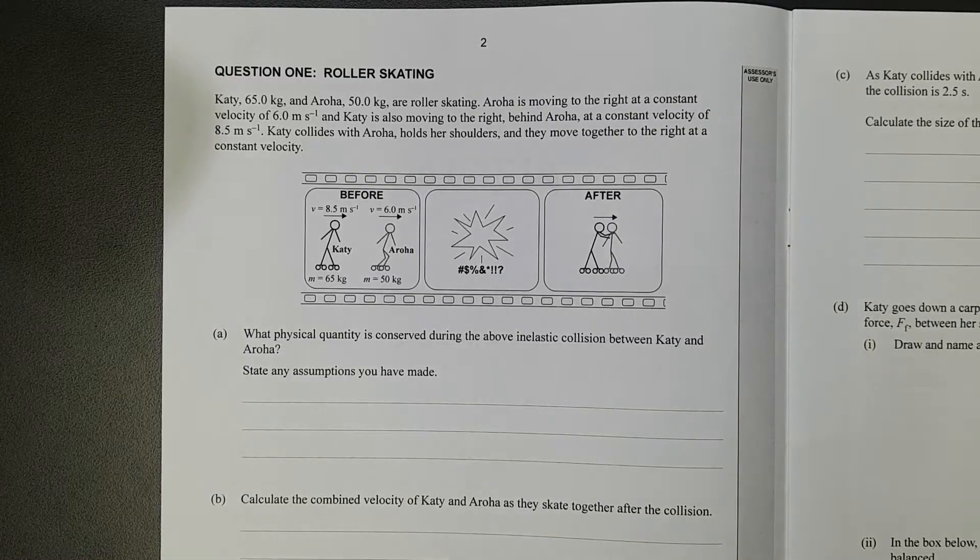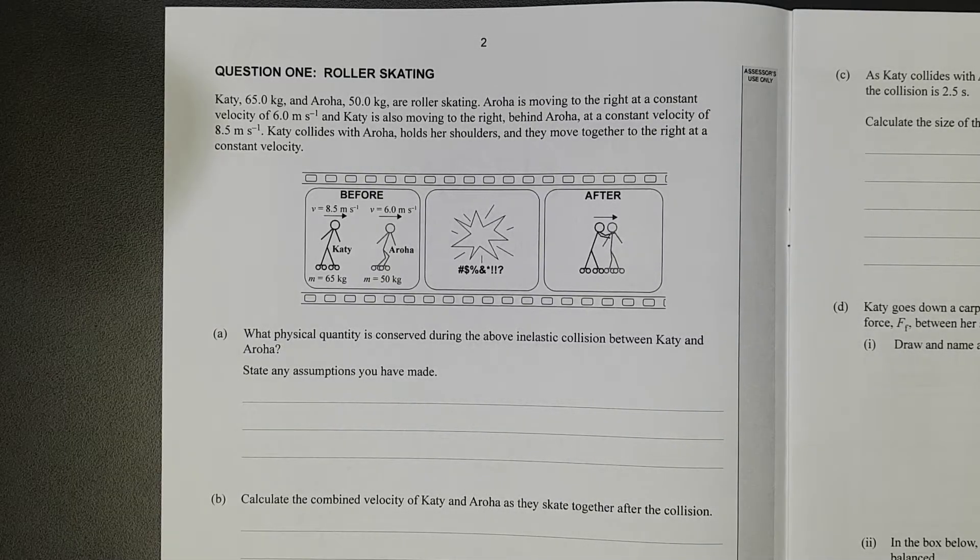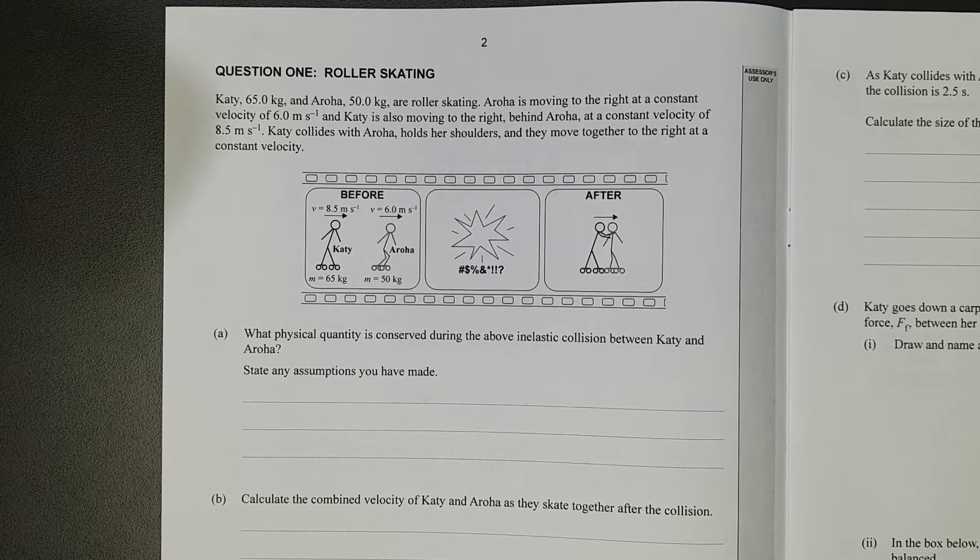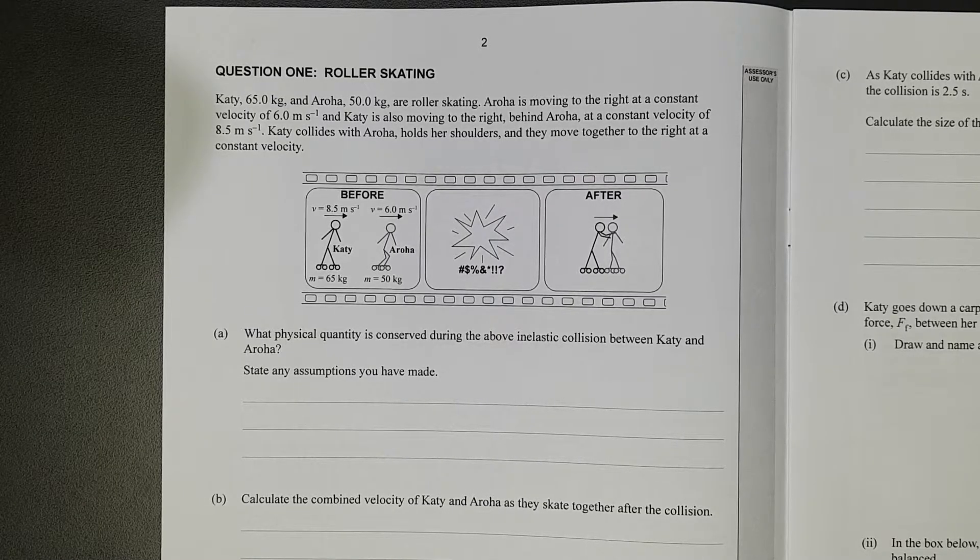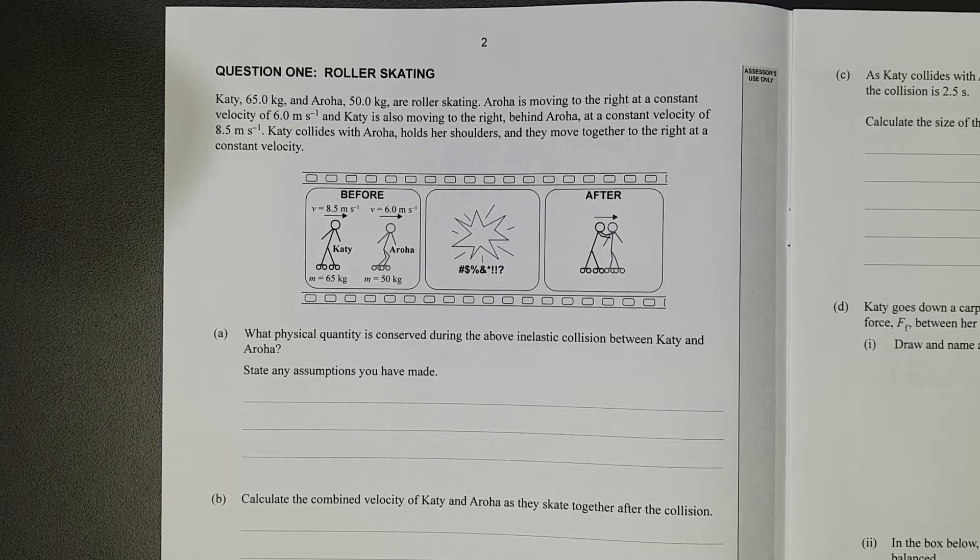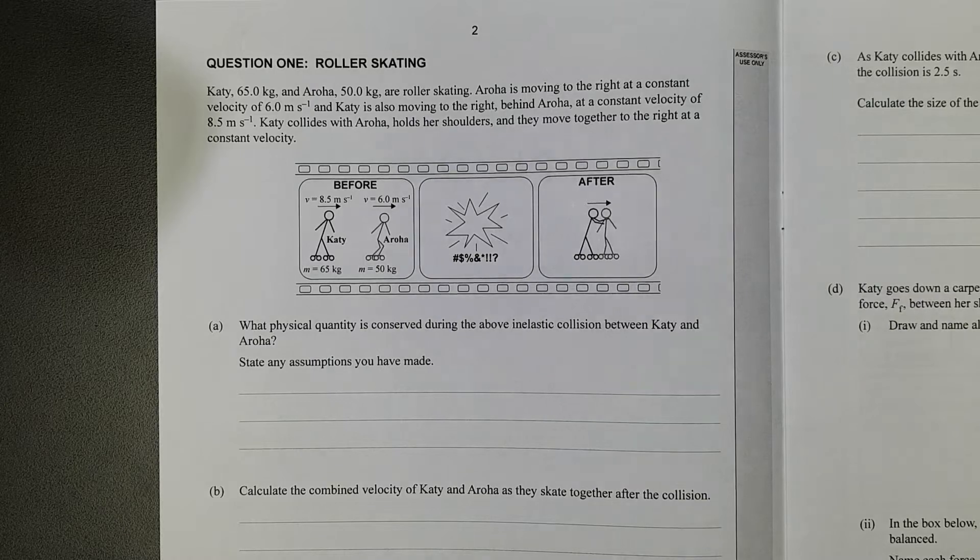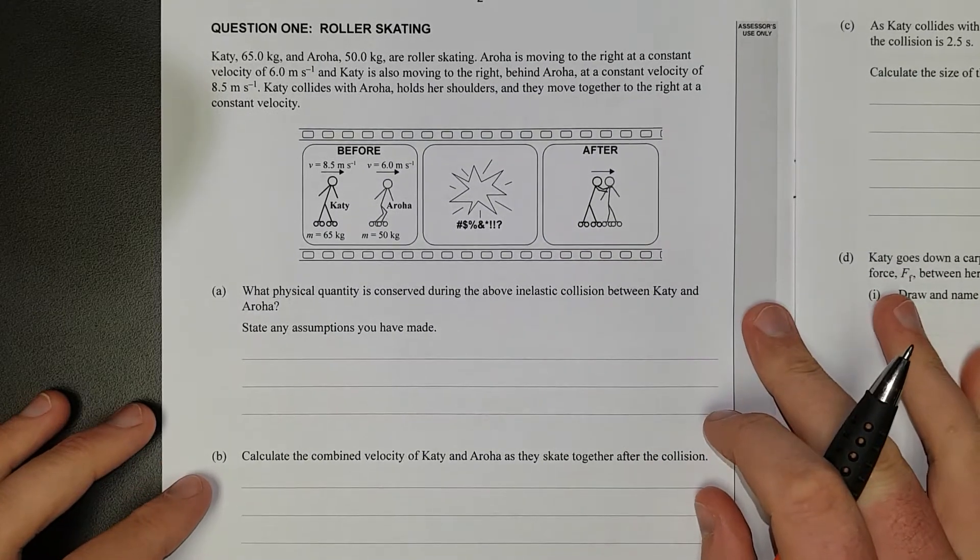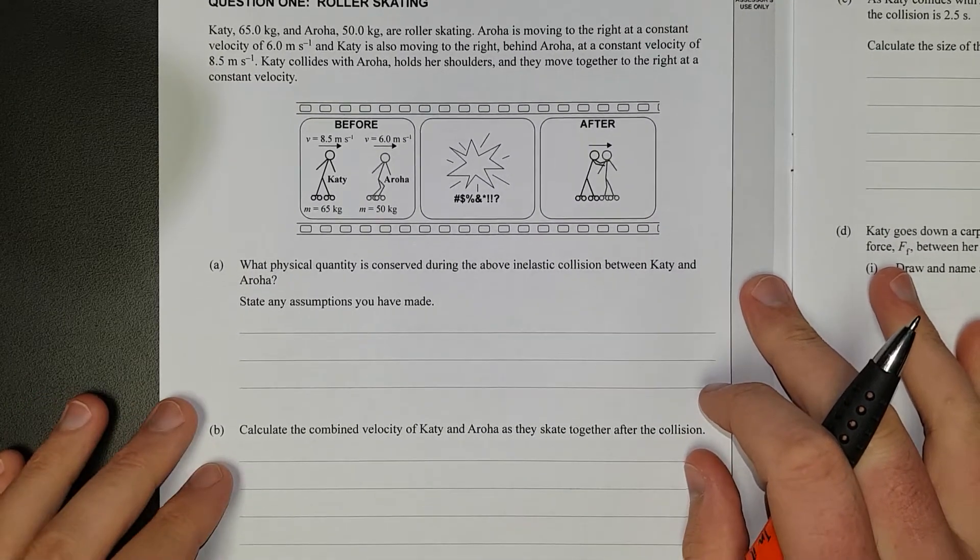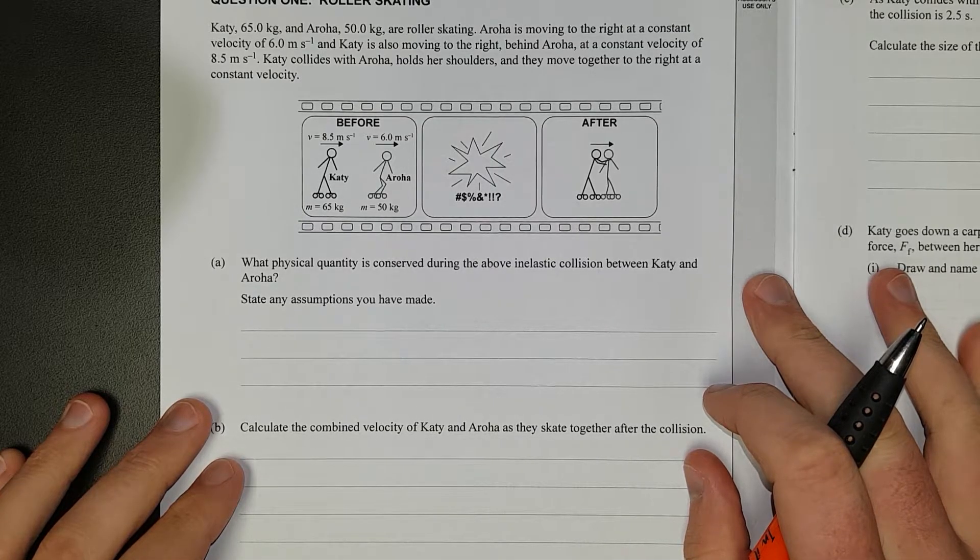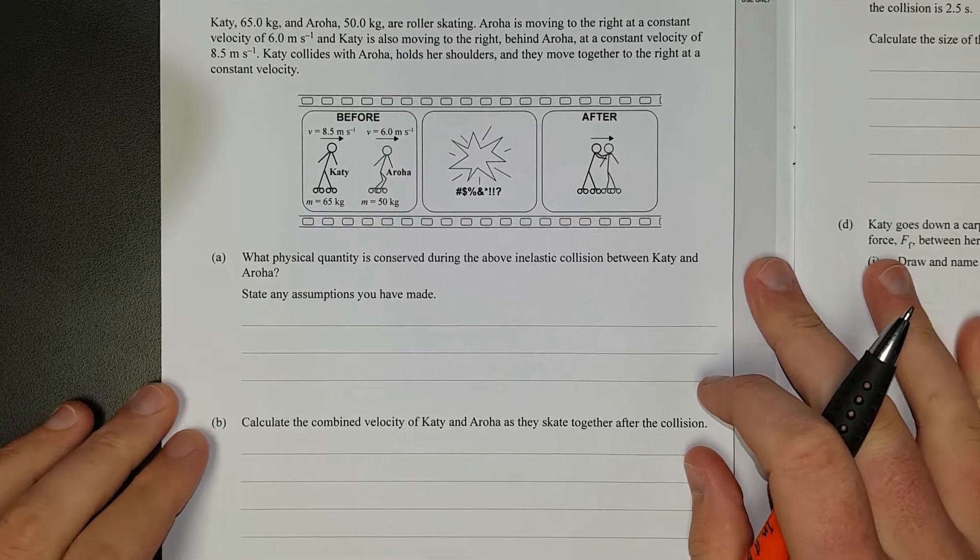Aroha is moving to the right at a constant velocity of 6 m per second. Katie is moving to the right behind Aroha at a constant velocity of 8.5 m per second. Katie collides with Aroha, holds her shoulders, and they move together to the right at constant velocity. So what physical quantity is conserved during the above inelastic collision between Katie and Aroha? State any assumptions you have made.